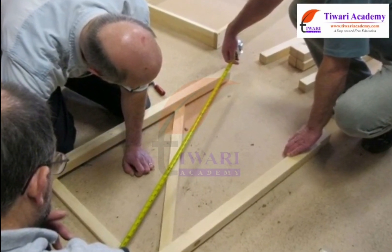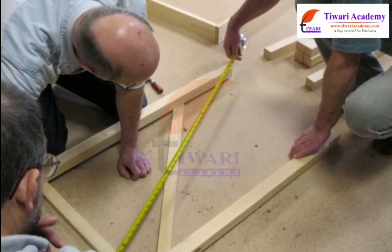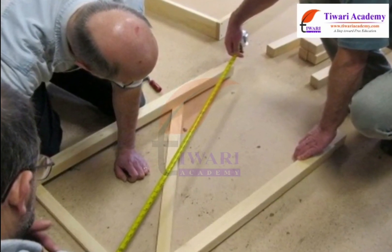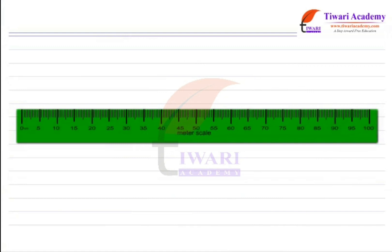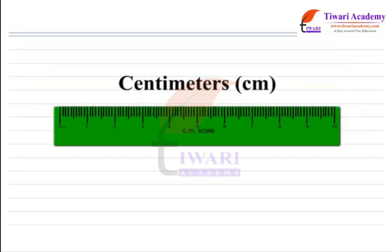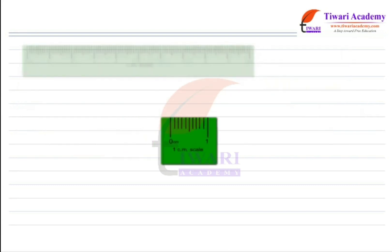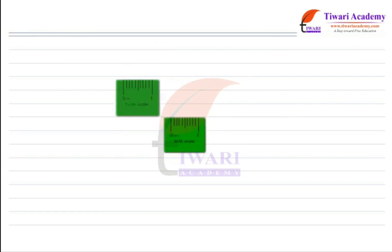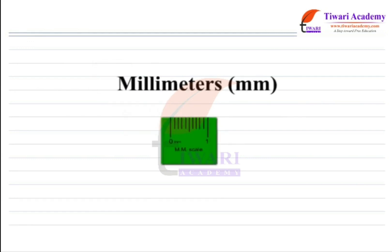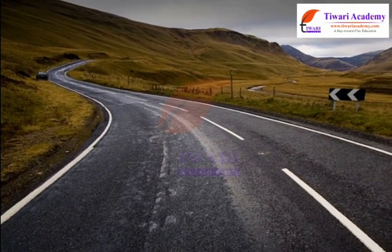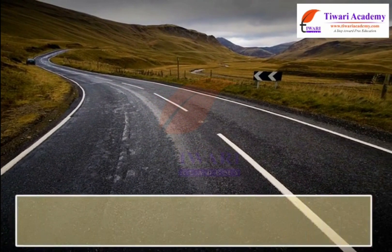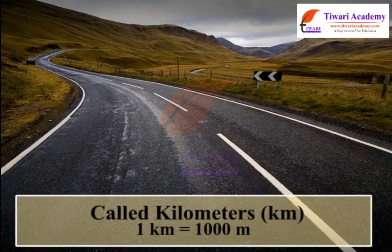The system of standard units of measurement used now is known as the International System of Units, or SI units. The SI unit of length is a meter. Each meter is divided into 100 equal divisions called centimeters. Each centimeter has 10 equal divisions called millimeters. For measuring large distances, meter is not a convenient unit, so we use a unit called kilometers.